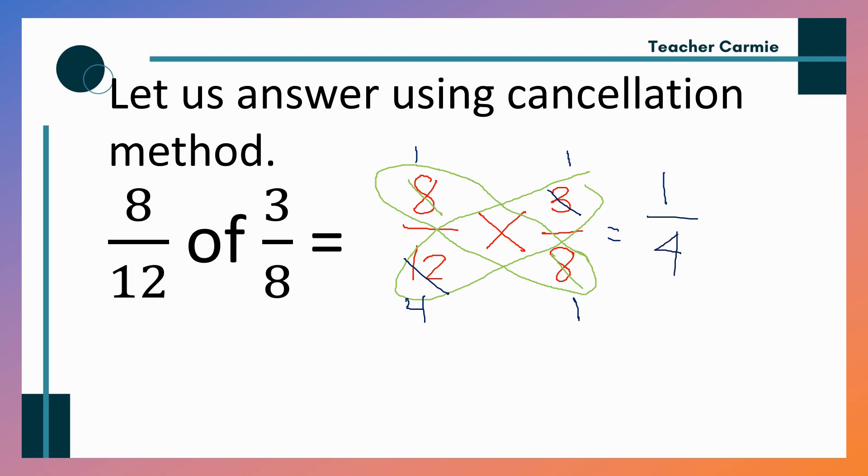Paano pa pag walang pwede i-cancel? Eh, di hindi tayo magka-cancelation method. Or, kung talaga nalilito kayo, pwede kayo mag-proceed sa ating, way na multiply numerator to numerator, denominator to denominator. Then, lowest term. So, anong kakahalagahan ng cancellation method? It helps us not to lowest term. Kasi, ang magiging sagot niyan, lowest term na.